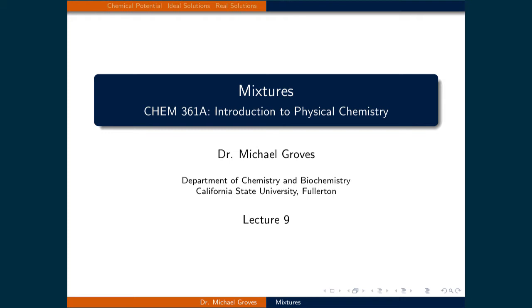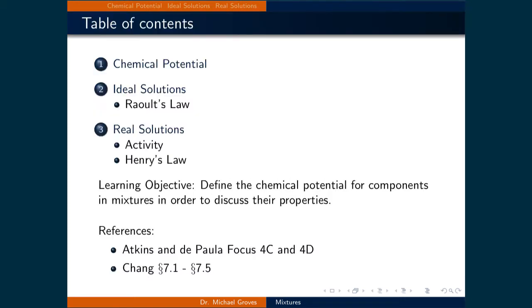Welcome to Lecture 9. In today's lecture we will define the chemical potential in order to analyze the thermodynamics of multi-component systems to describe what happens in mixtures. This lecture will be divided into three parts. First, we will define what is the chemical potential. Then, we will use it to discuss ideal solutions. Finally, since we live in the real world, we will examine how real solutions are described.